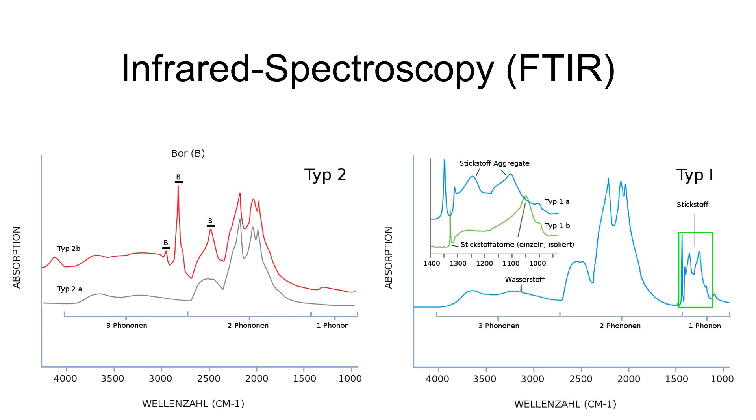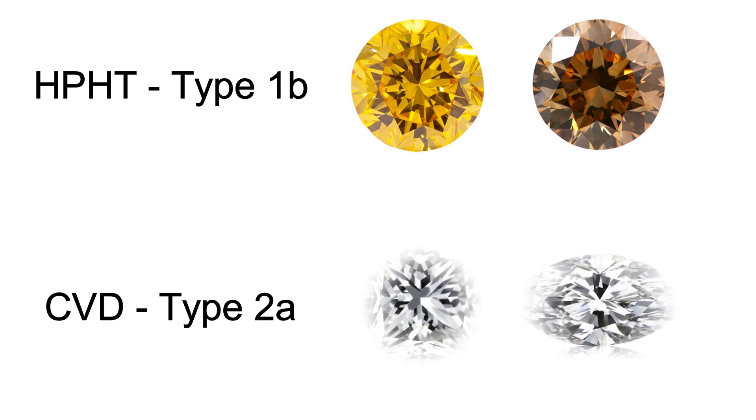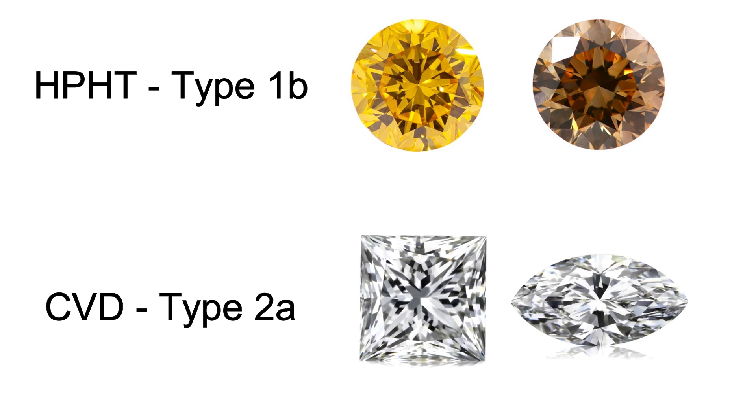The common method to determine diamond type is infrared spectroscopy. It measures individual atoms and helps us analyze the specific absorption patterns of nitrogen and boron within the diamond. Most synthetic diamonds created by the HPHT method are of type 1b, while the CVD production mainly creates diamonds of type 2a.